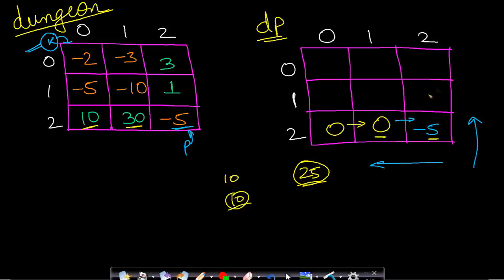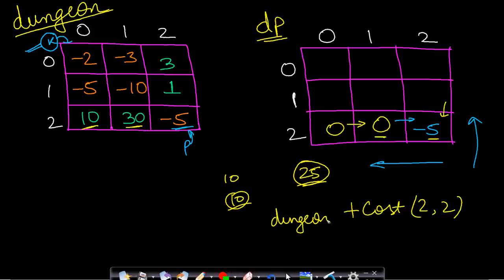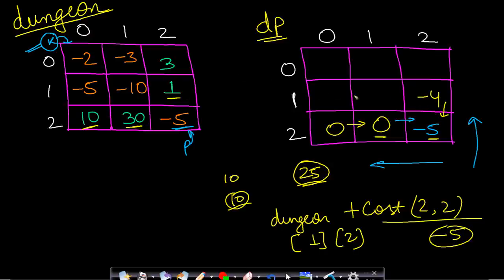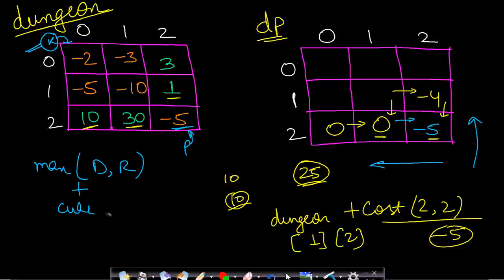Cell 0,1: take maximum of right (dp[0,2]=minus 1) and down (dp[1,1]=minus 10), which is minus 1, plus current cost minus 3 gives minus 4. Cell 0,0: take maximum of right (dp[0,1]=minus 4) and down (dp[1,0]=minus 5), which is minus 4, plus current cost minus 2 gives minus 6.